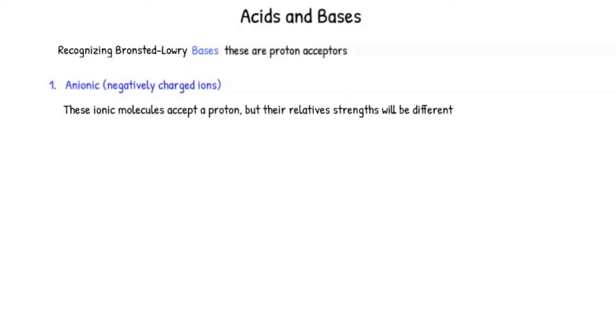This is a lesson on recognizing Bronsted-Lowry bases. These are proton acceptors. First, anionic molecules or negatively charged ions. These ionic molecules accept a proton, but their relative strength will be different. This difference in relative strength will be determined later.